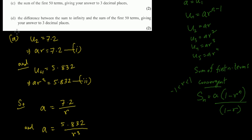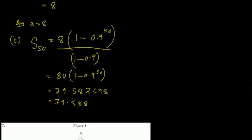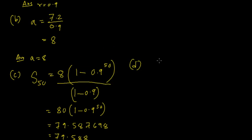Part d: the difference between the sum to infinity and the sum of the first 50 terms. For a convergent series, the sum to infinity formula is S∞ = a / (1 - r). With a = 8 and r = 0.9: S∞ = 8 / 0.1 = 80.